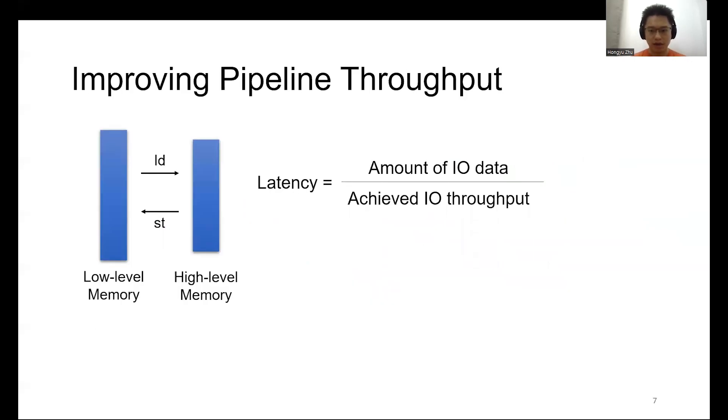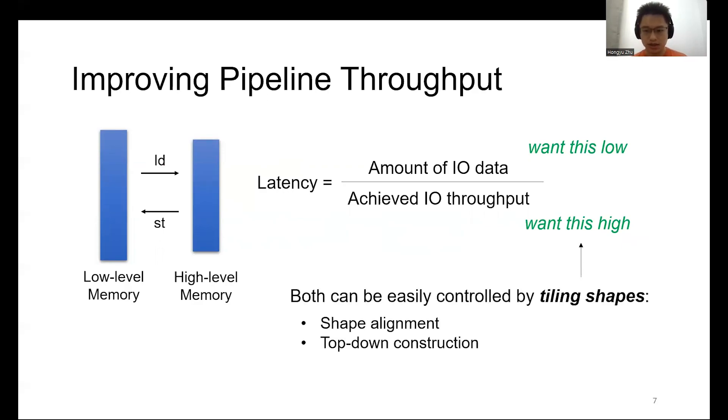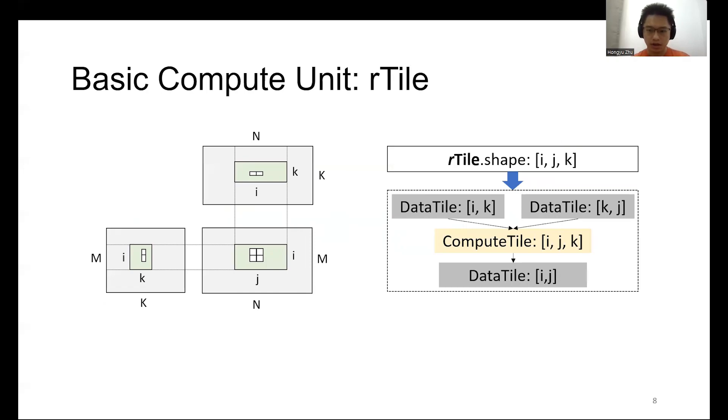To improve the pipeline throughput and reduce the performance bottleneck, our main optimization goal is to reduce the latencies in the memory levels. The latency of the memory level equals the amount of data over achieved I/O throughput. We want the amount of transmitted data being low, and we want the achieved throughput being high. Both of these goals can be easily controlled by tiling shapes. To be more specific, Roller uses two ideas to adjust the shapes. The first is the alignment requirements for the shapes itself, and the second is a top-down recursive construction to determine the tiling for each pipeline level.